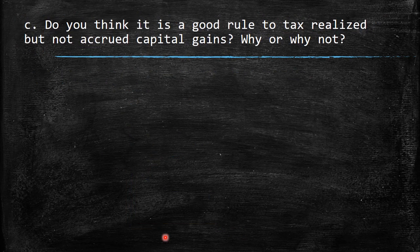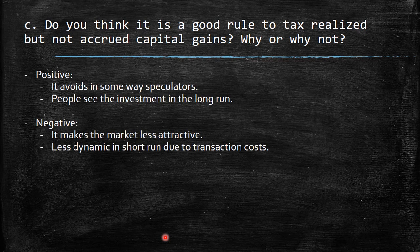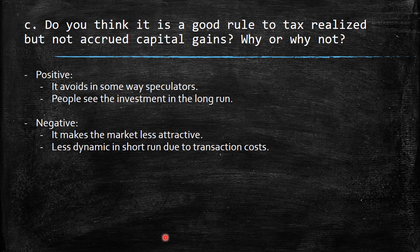Then: do you think it is a good rule to tax realized but not accrued capital gains? Why or why not? Basically, we have two facts here. The positive fact is that it avoids speculators, because speculators can just look for fast, rapid gains. So we can avoid this kind of market behavior, and all the prices are going to be generated by real participants within the market. At this time, people start to see investment in the long run, making this kind of investment safer.